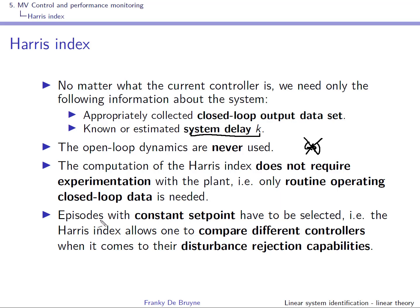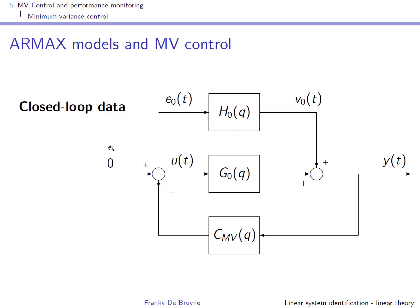You have to consider episodes with constant setpoint, because the Harris index is a control performance monitoring index for disturbance rejection. It allows you to compare different controllers by benchmarking each against the optimal minimum variance controller. With the setpoint equal to zero, you can compute the relation between E — the noise input — and Y — the output — as a closed-loop transfer function. So Y of T equals H closed-loop of Q times E zero of T.